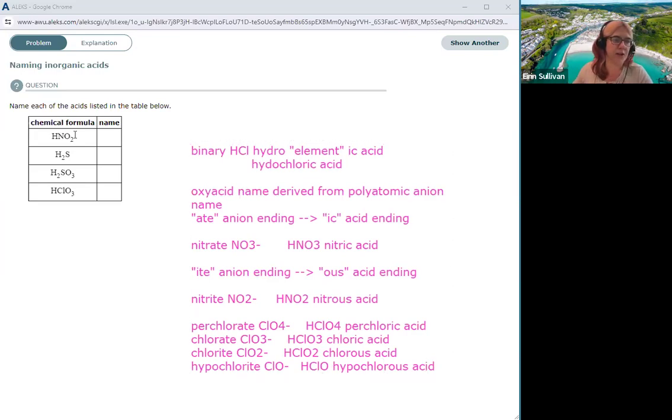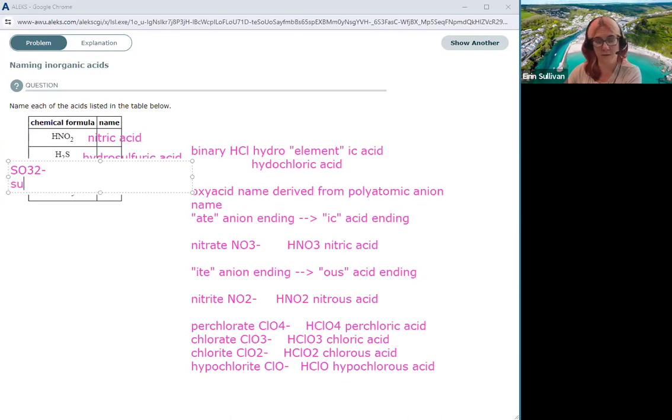So, like for these guys then, HNO2, that is going to be nitric acid. H2S is going to follow the binary rules, so that is going to be hydrosulfuric acid. H2SO3, well SO3 2 minus is the sulfite ion, so that would be sulfurous acid. SO3 2 minus is sulfite.